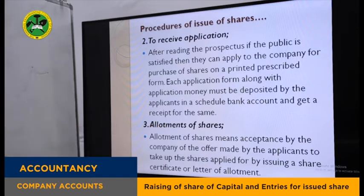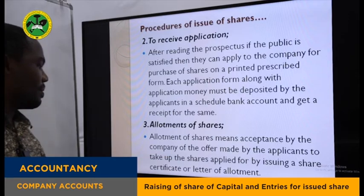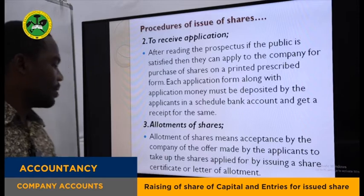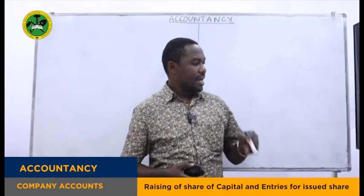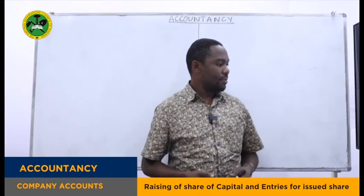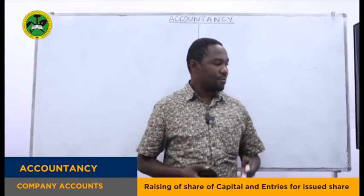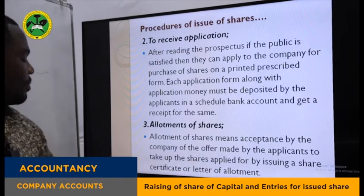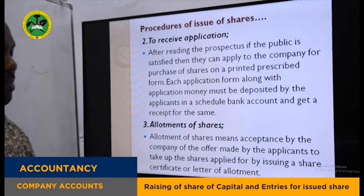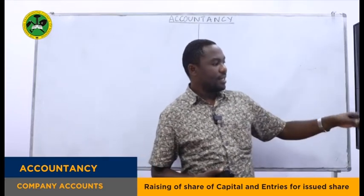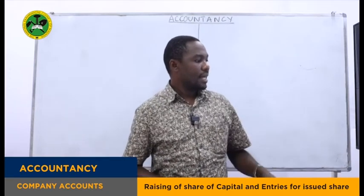The third procedure is allotment of shares. Allotment means the acceptance by the company of the offer by applicants — issuing a share certificate or letter of allotment to confirm the number of shares applied for. Here, the issue of under or oversubscription arises. If the public applies for more shares than issued, that is oversubscription. When the public applies for fewer shares than issued, that is undersubscription.